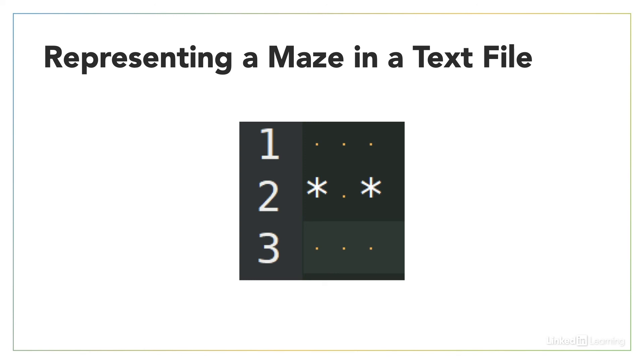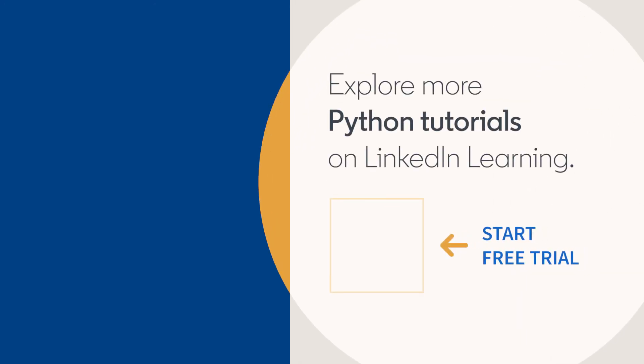Now you know how to represent and store a maze in a 2D list. If at any point you get confused about 2D list indices, come back and watch this video again to remind yourself how they work. It's a bit like orienting a map. Once you have the direction fixed, finding your way becomes relatively simple. So let's go.